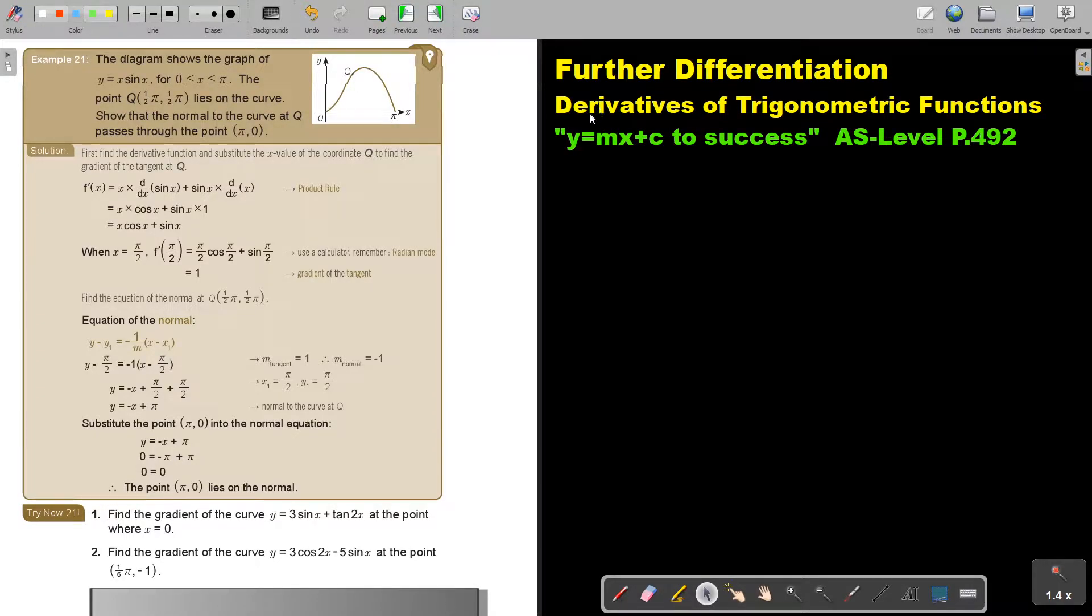In this video we are going to continue with derivatives of trigonometric functions. You will find this on page 492 in the Namibia AS level mathematics textbook Y equals MX plus C to success.